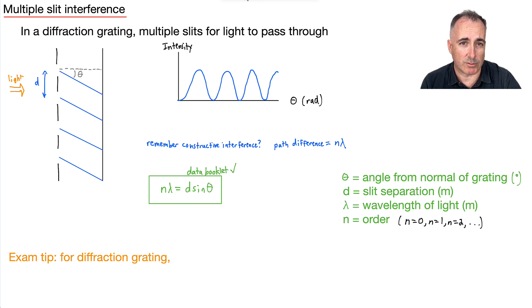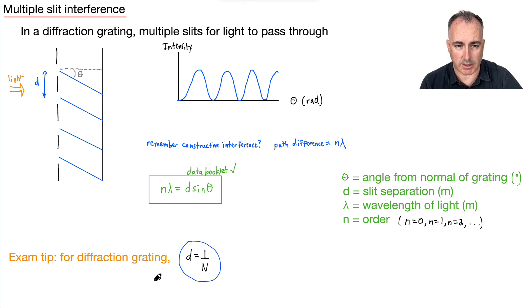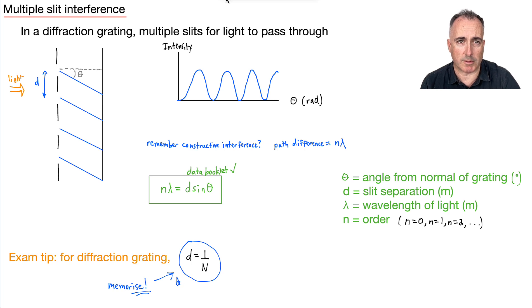One really important thing for your diffraction grating — there's a little equation you need to learn. D is going to be 1 over N. I think you should memorize this equation. N here is the number of lines per meter.